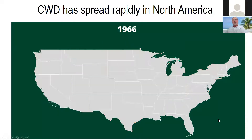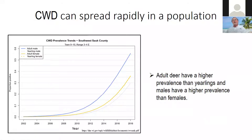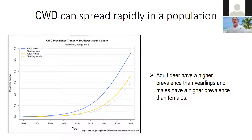CWD spread throughout the country, and here's an example from southwestern Sauk County in Wisconsin where there's a major CWD outbreak. In 2002, the incidence of CWD was around zero, and 16 years later, almost 60% of all adult males had CWD. It's the actual incidence — deer tested in 2002 didn't have it, but in 2018, almost 60% of the bucks, and in some areas almost 70%, were positive. Adult deer have higher prevalence than yearlings, and males have higher prevalence than females. We think that's because bucks travel over larger distances and if infected, spread it more easily.